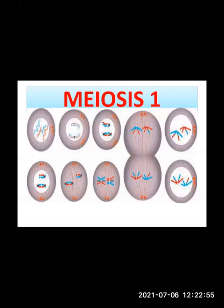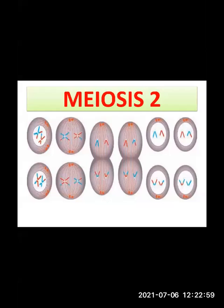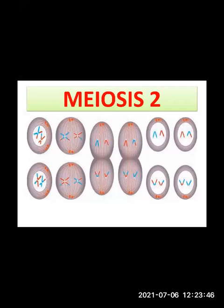Now in meiosis 2, there are different stages as well: prophase 2, metaphase 2, anaphase 2, and telophase 2. Meiosis 2 is just like mitosis, which you studied last week. In meiosis 2, the two haploid daughter cells formed in meiosis 1 undergo division by separation of recombined sister chromatids.